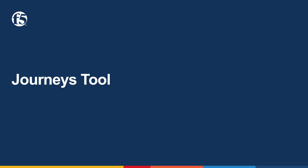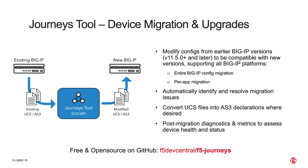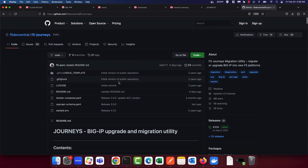The F5 Journeys Migration Utility is a complementary tool designed to assist BigIP customers with migrating applications and their configurations from one BigIP TMOS instance to another. Journeys helps partially automate this process by modifying and upgrading BigIP TMOS configurations from an existing device to be compatible with software running on a target instance. This significantly reduces the time and manual effort required to migrate workloads. Journeys is available for download and install at the F5 Dev Central GitHub repository.